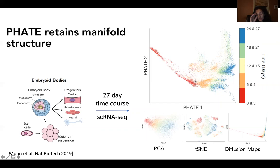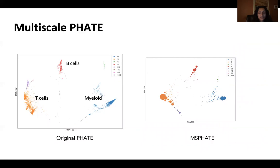t-SNE, for example, can shatter the data and scramble things globally, and PCA doesn't denoise it. On this human embryonic stem cell dataset from the paper, we see that only FATE shows this branching differentiation structure into different lineages, like neuronal lineages, for example.